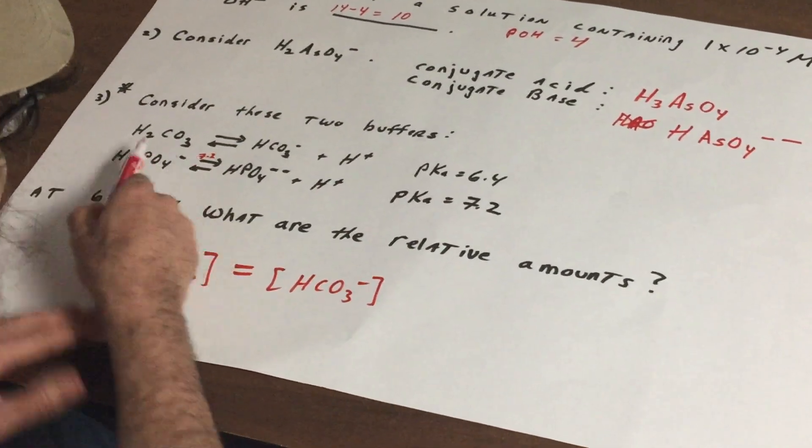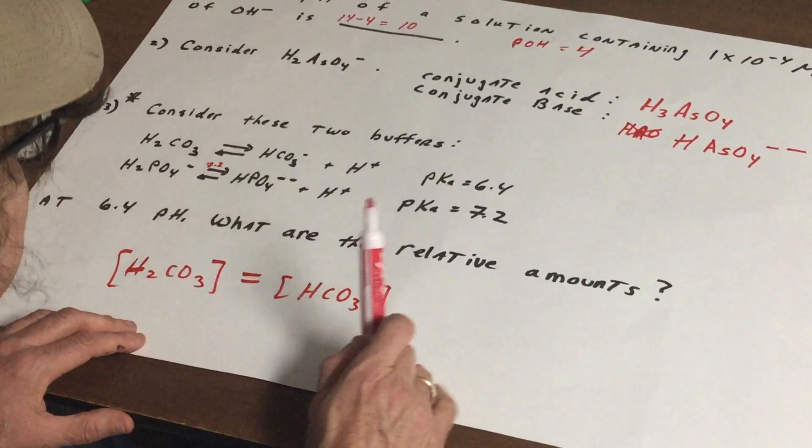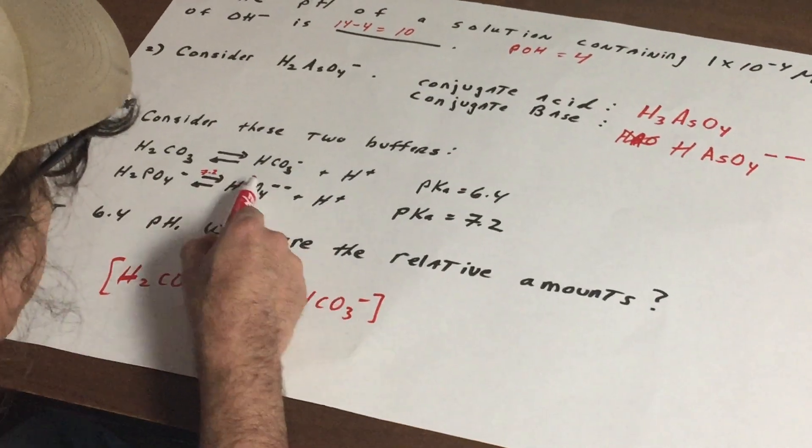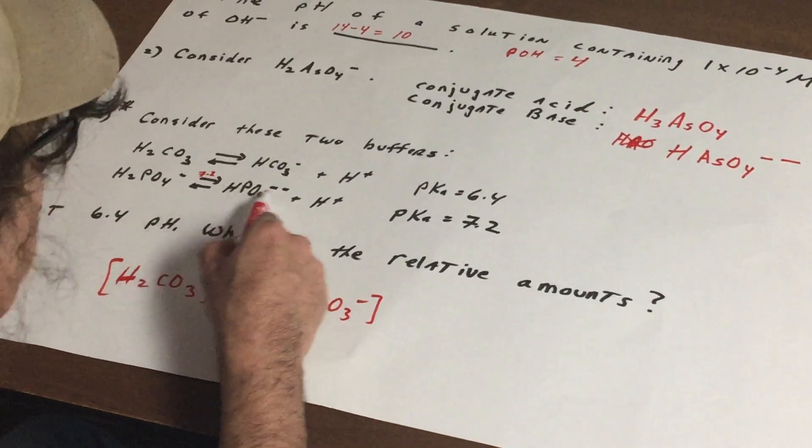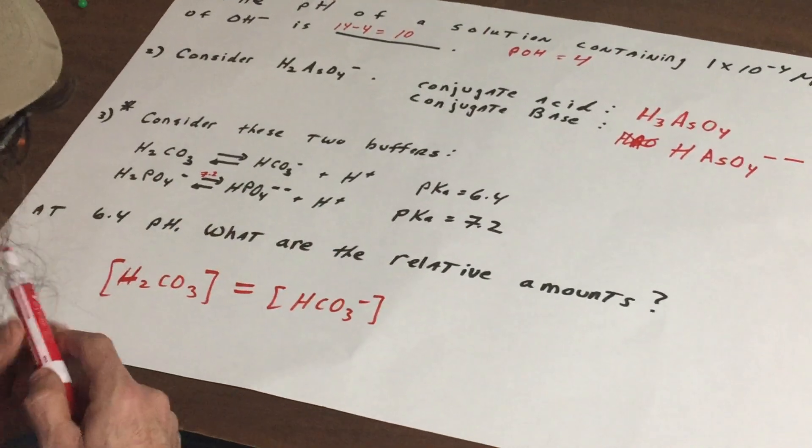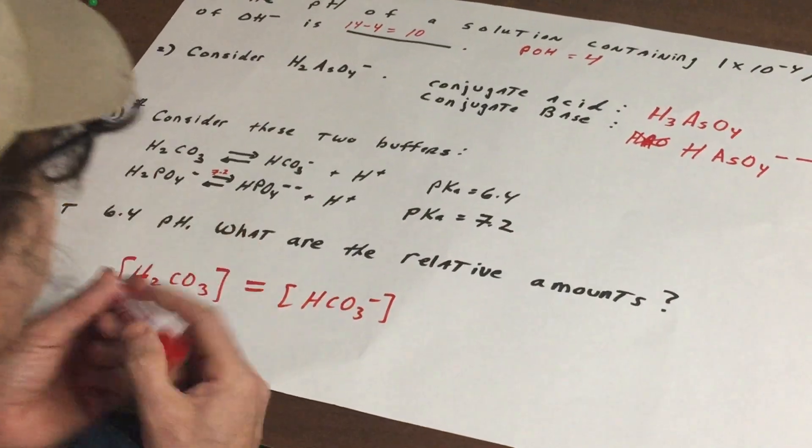Anything below that number would favor this. Anything above this would favor this. So for instance if you were at a pH of 11, that would put me to the right and that means that you would get a greater amount of HPO4^2- than H2PO4-. Well you're at 6.4 so that will put you to the left.